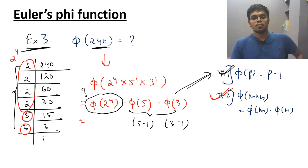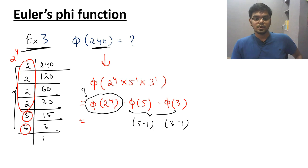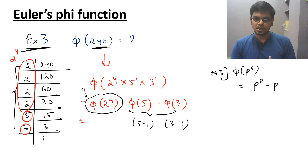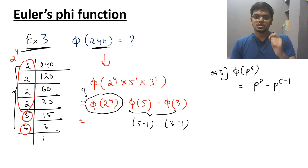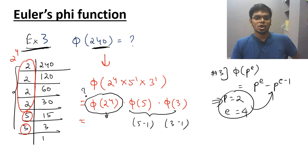Property number 3: if you have phi of a prime number raised to some power e, then the answer is p raised to e minus p raised to e minus 1. In this case p equals 2 and e equals 4. So phi of 2 to the power 4 equals 2 to the power 4 minus 2 to the power 3, which equals 16 minus 8 equals 8. The final answer comes out to be 8 times 4 times 2 equals 64.